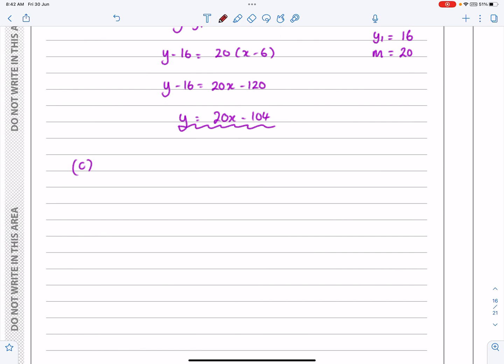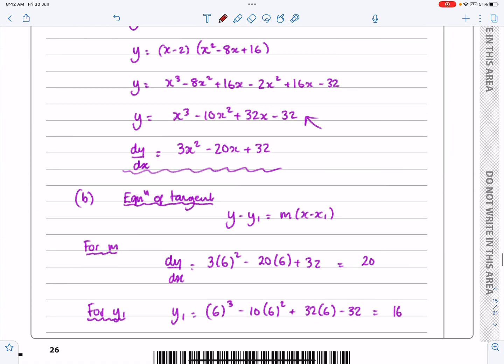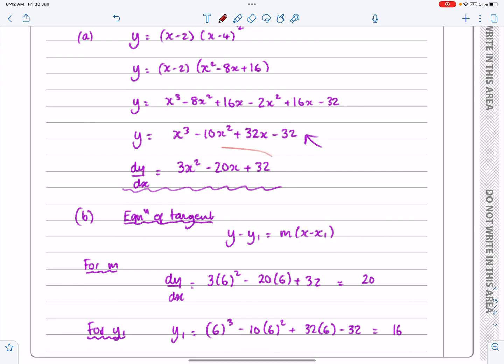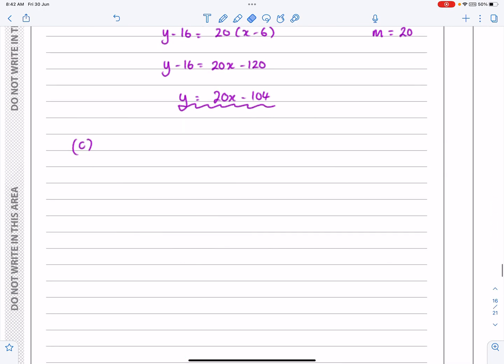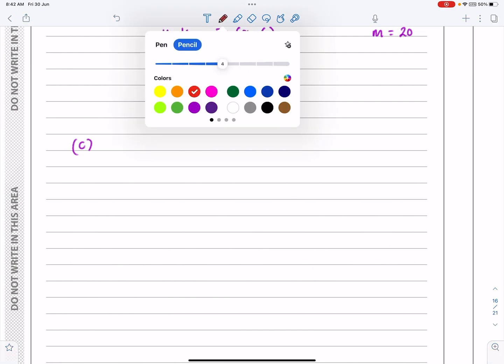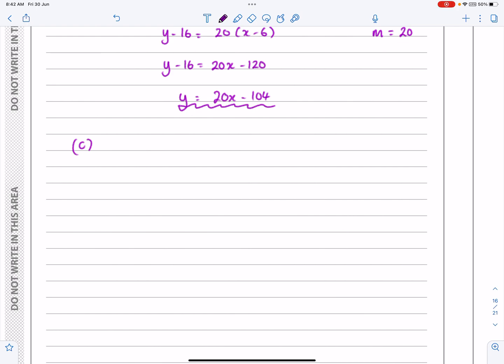So if the gradient is equal to 20, remember the name of this thing—it's the gradient function. I hope your teachers are telling you that. Yes, it's the differential, it's dy/dx, f'(x), there's all sorts of other things, but a better name for it is the gradient function. It gives me the gradient at any point. Well, I want to know when is the gradient equal to 20.